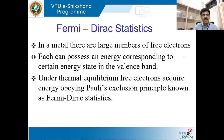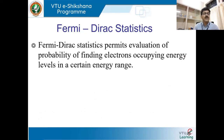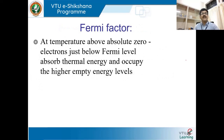There are N energy levels, N electrons, and N/2 levels are occupied. Every electron energy is discrete and no two electrons in any energy level are identical; they are indistinguishable particles with spin half. Fermi-Dirac statistics permits evaluation of the probability of finding an electron occupying energy levels in a certain energy range. Since we cannot see the electrons directly, we use this probability. The evaluation is done through a function called the Fermi factor.